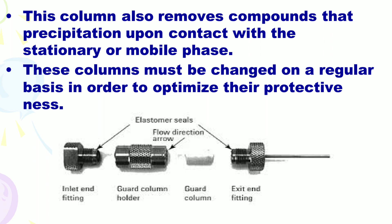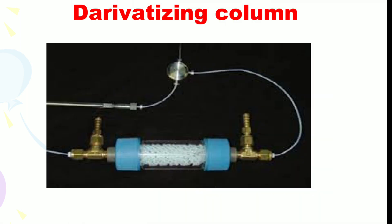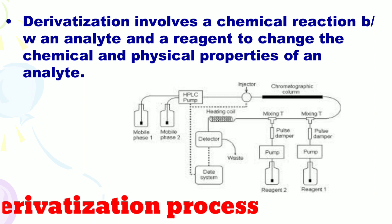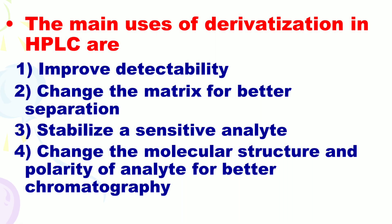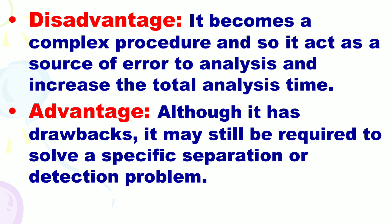These columns must be changed on a regular basis in order to optimize their protectiveness. Next is the derivatization column. Derivatization involves a chemical reaction between an analyte and a reagent to change the chemical and physical properties of an analyte. The main uses of derivatization in HPLC are: improve detectability, change the matrix for better separation, stabilize a sensitive analyte, and change the molecular structure and polarity of the analyte for better chromatography. The disadvantage of this column is it becomes a complex procedure and acts as a source of error in analysis, increasing the total analysis time.